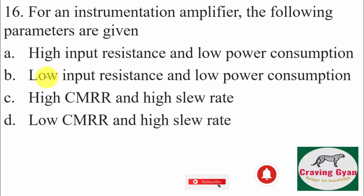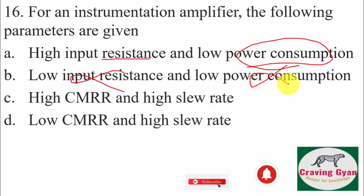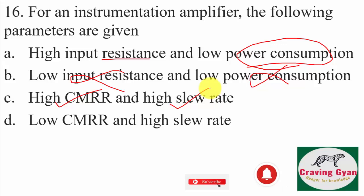Sixteenth question: for an instrumentation amplifier, the parameters given include high input impedance and low power consumption. Option A — more power consumption — wrong. Option B — low input impedance — wrong. Option C — high common mode rejection ratio (ratio of differential gain to common mode gain) and high slew rate (how fast the circuit can track input changes) — yes, both are correct. Hence option C is going to follow.